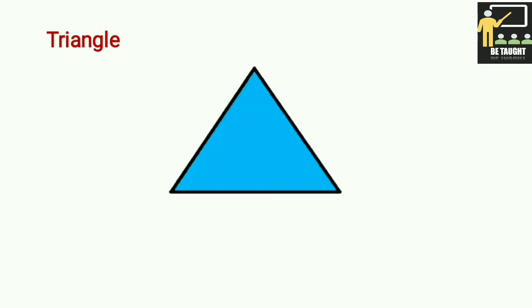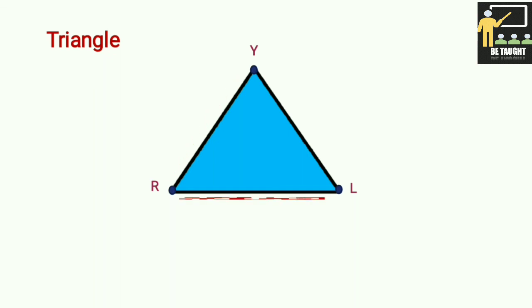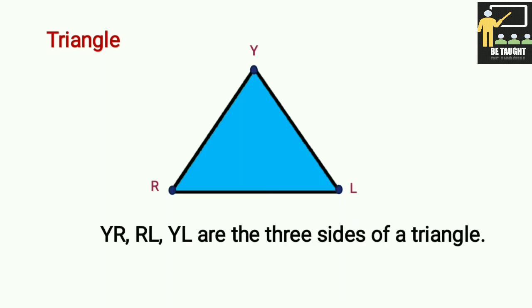Triangle: A triangle has three vertices and three sides. Y, R, L are the vertices of this triangle. YR, RL, and YL are the three sides of the triangle. A triangle has three angles.